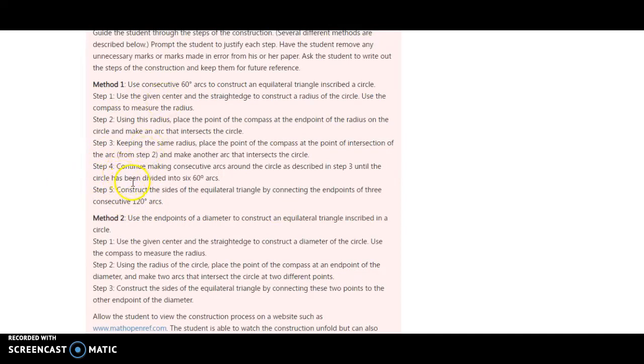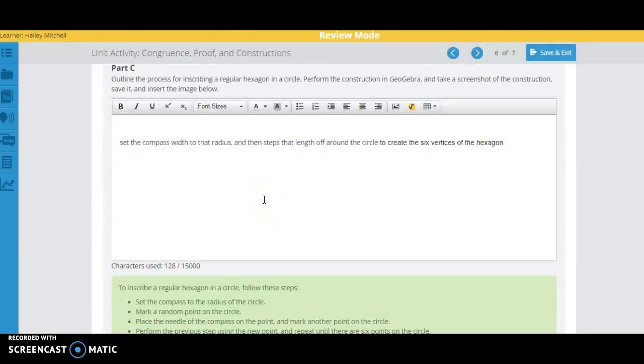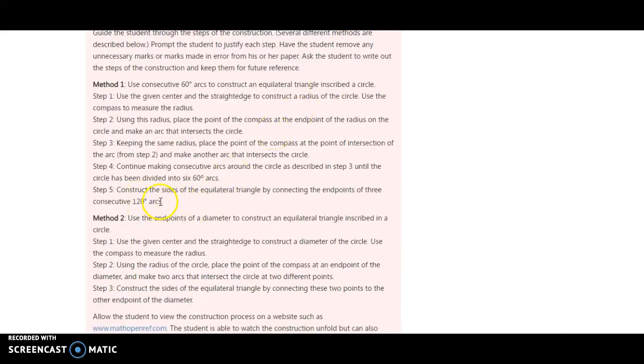And then for step five, you're just going to say construct the sides of the, what was it, a hexagon? Yeah, by connecting all six of the points instead of the three. Okay, so hopefully this helps.